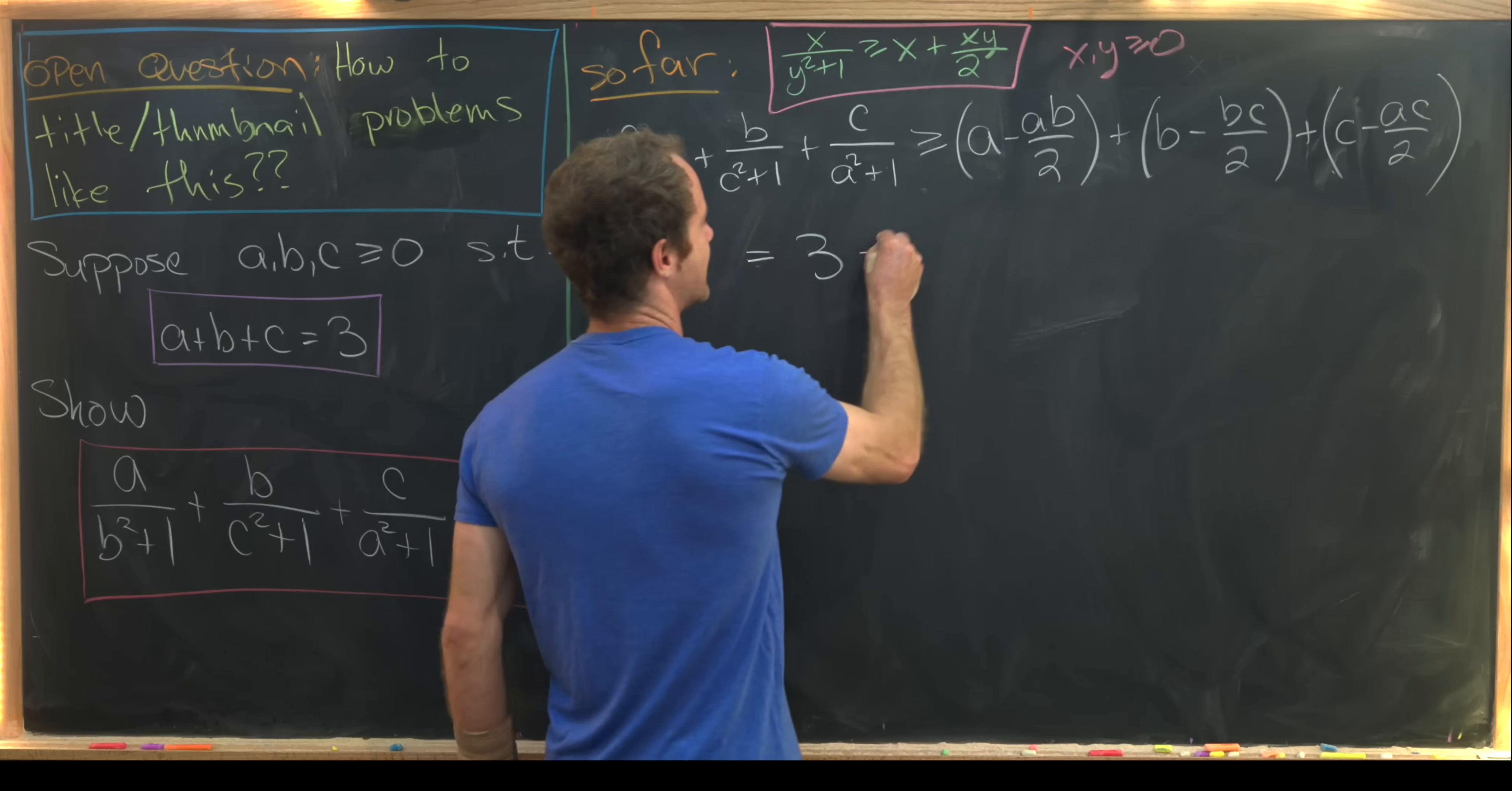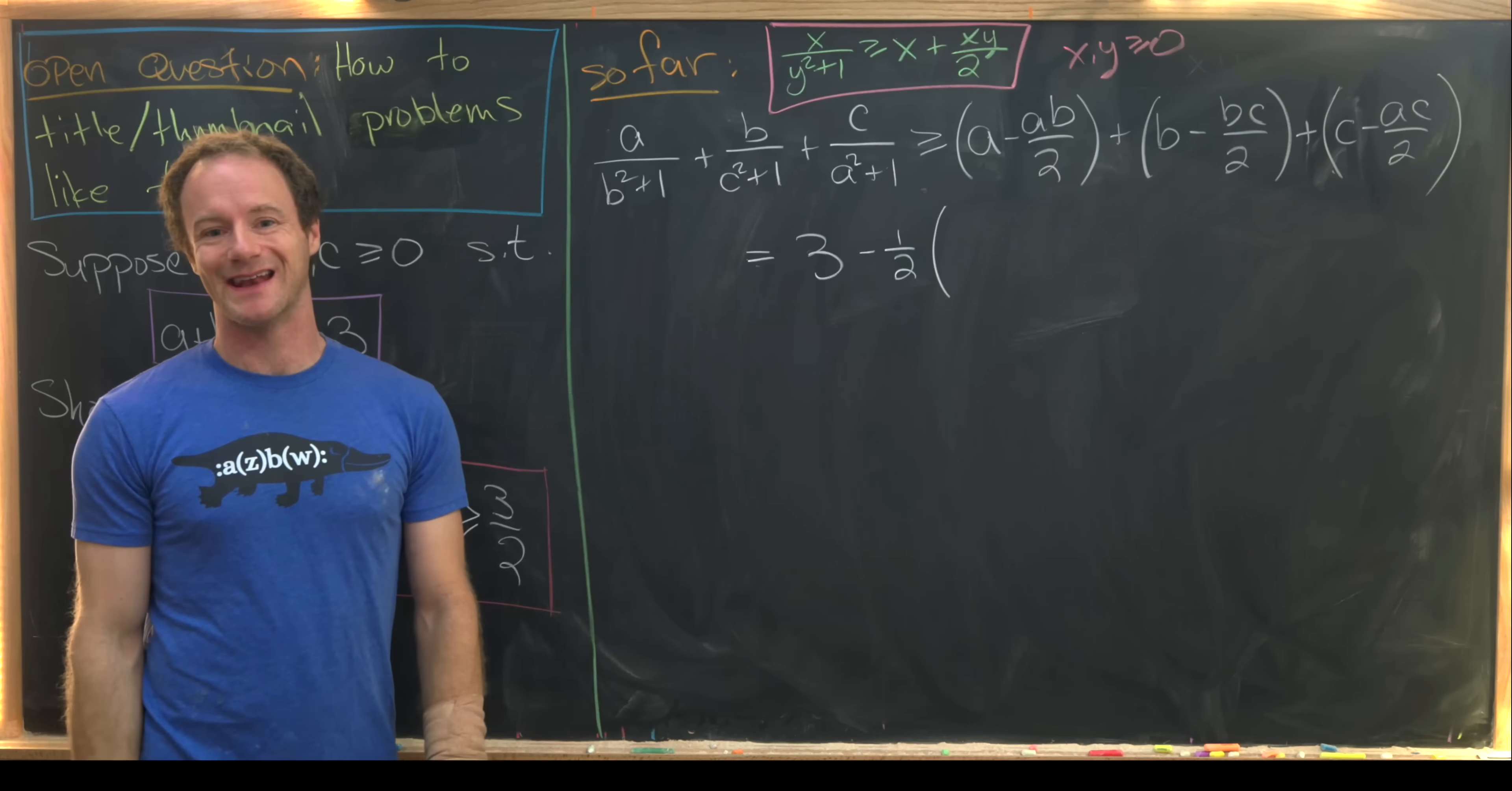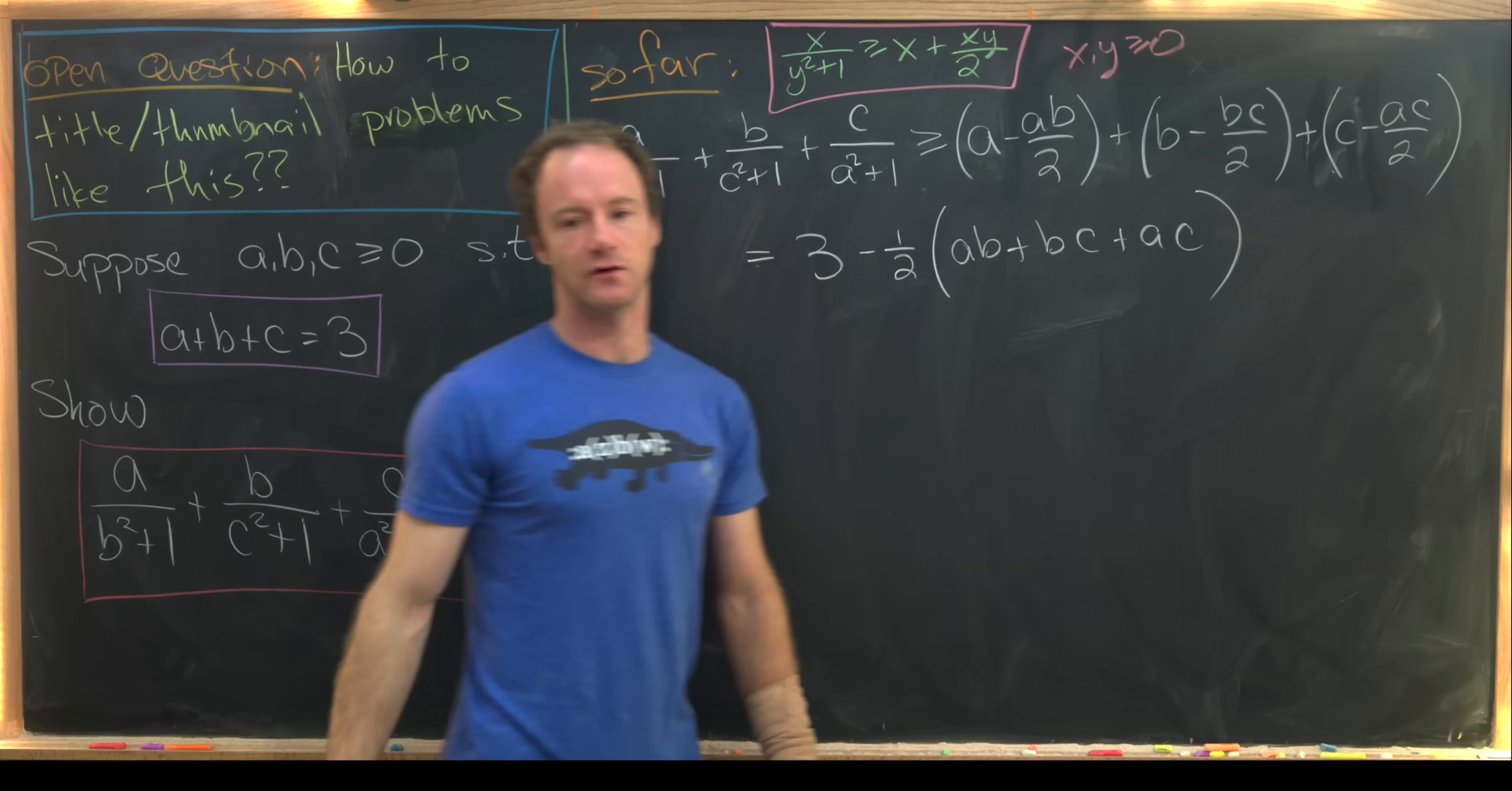And then we're left with minus 1 half, and then this cyclic sum of terms that are quadratic in a, b, and c. So we've got ab plus bc plus ac left over. And now we want to get a handle on this.